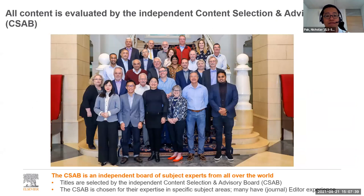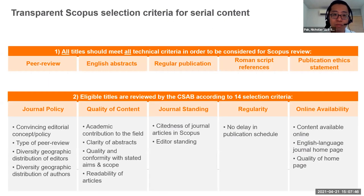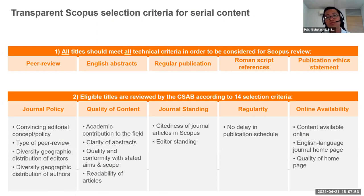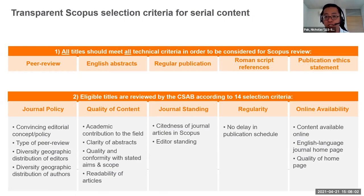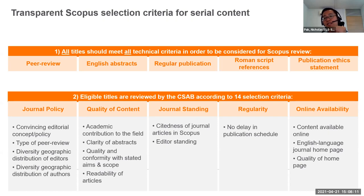The CSAB members are journal editors chosen for their expertise in specific subject areas. All titles on Scopus go through two rounds of selection. In the first round, titles must meet minimum criteria to be considered for review: peer review, abstract written in English, published regularly, Roman script references, and a publication ethics statement. These are the five required steps — what we call the title suggestion phase.